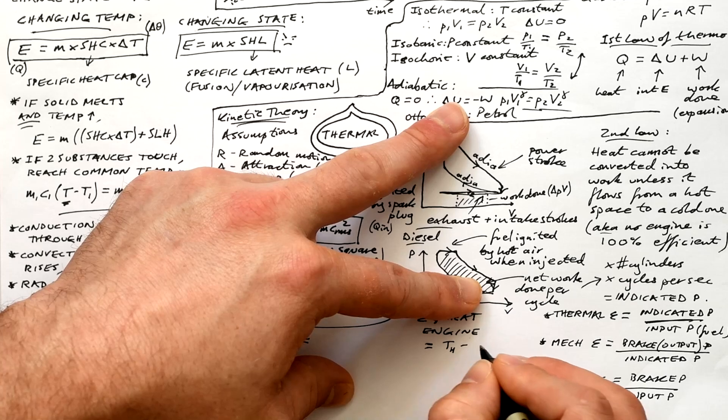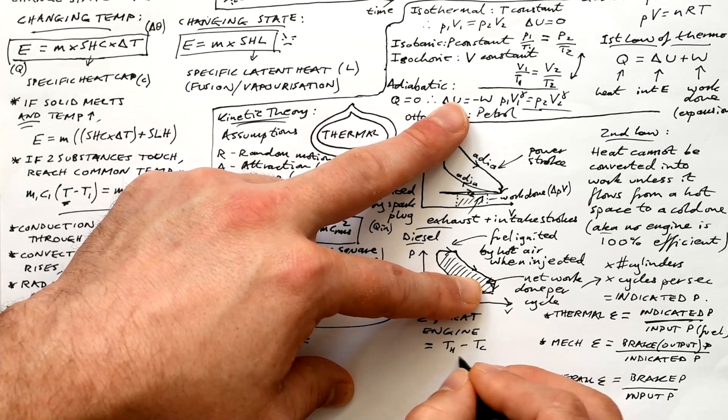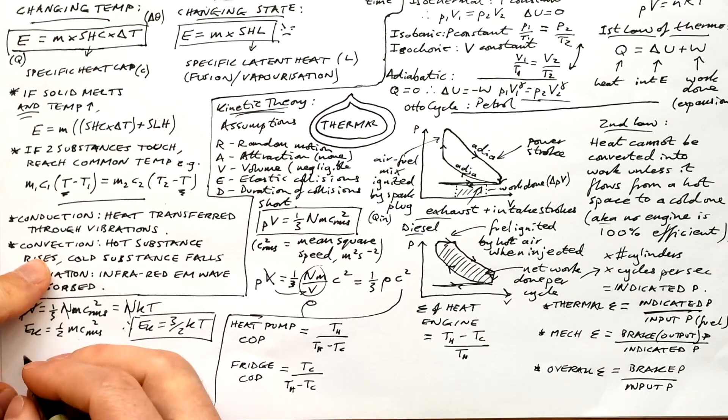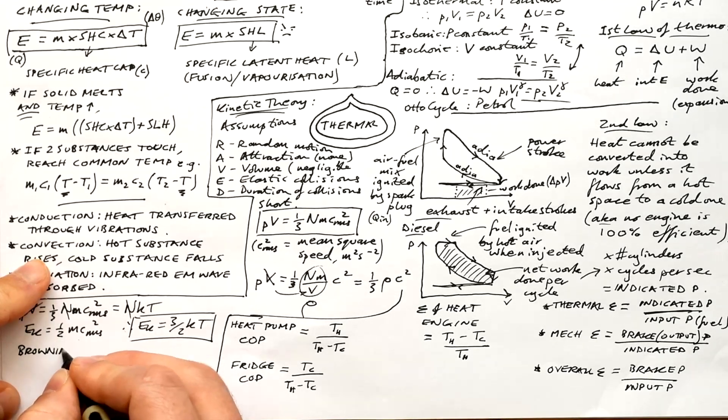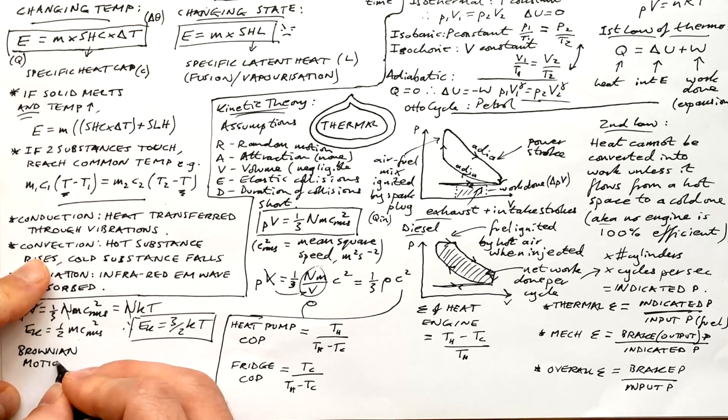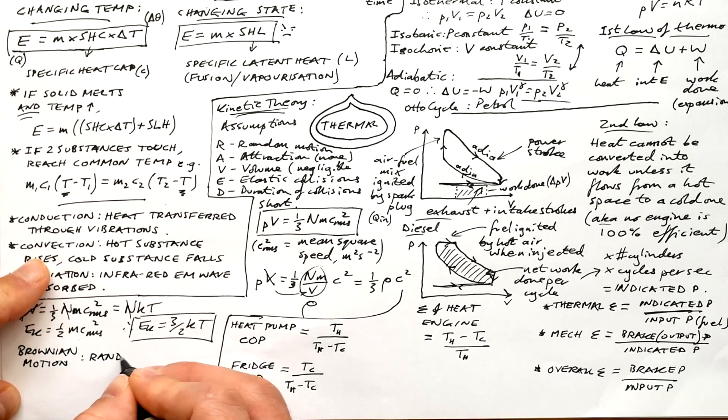Coefficient of performance for heat pumps and fridges, basically the reciprocal of efficiency. So we end up with a number bigger than one. And for a heat pump, we put hot temperature on top and fridge, we put cold temperature on top because that's what we want for both. And we can replace these temperatures with heat cues and the equation still hold true.